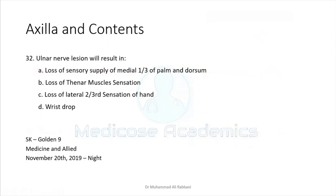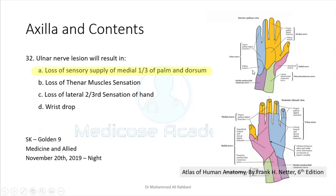Ulnar nerve lesion results in loss of sensory supply of the medial one-third of the palm. The loss of thenar muscles is done by the median nerve. Loss of two-thirds of hand sensation — no, it is the medial one-third. Wrist drop is caused by the radial nerve, not the ulnar nerve. The ulnar nerve supplies one and a half fingers on the front and about two and a half on the back on the medial aspect.